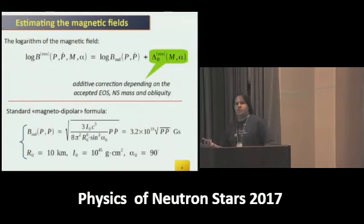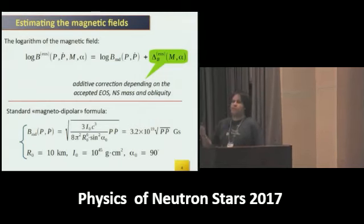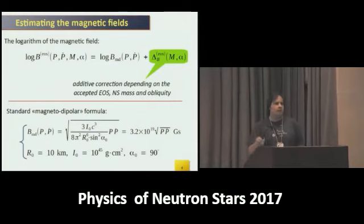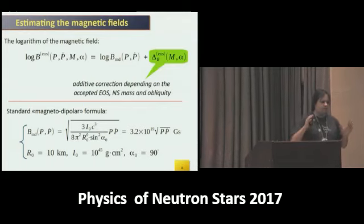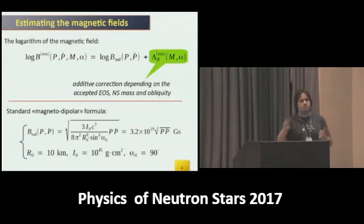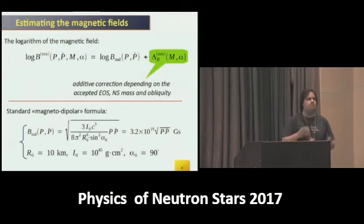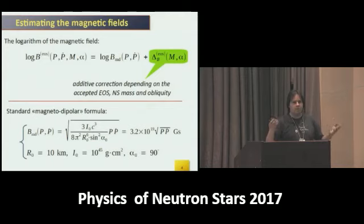Of course, we're unable to calculate this correction term for an individual pulsar. But what we can do is constrain the distributions of magnetic angles, masses of radio pulsars over the entire pulsar population. We can impose reasonable constraints to the equation of state and calculate the distribution of this correction, adopting some equation of state.